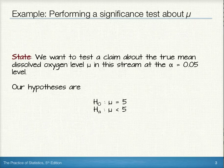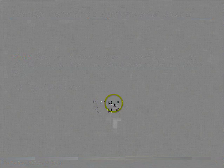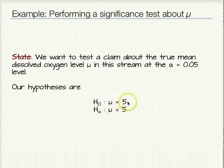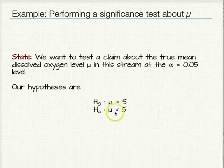To start with, let's state our problem. We want to test a claim about the true mean dissolved oxygen level mu in this stream at the alpha equals 0.05 level. Our hypotheses are the null hypothesis that mu equals 5, against the alternative hypothesis that mu is less than 5.